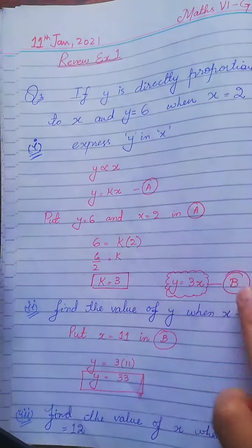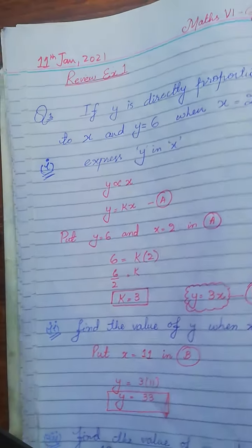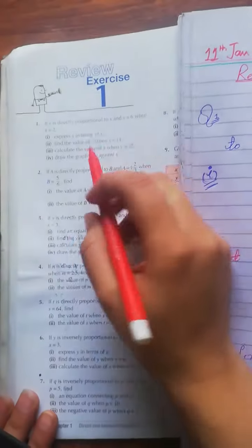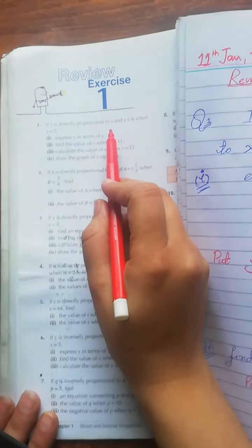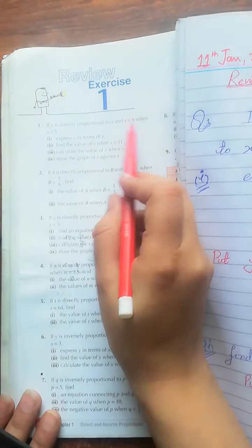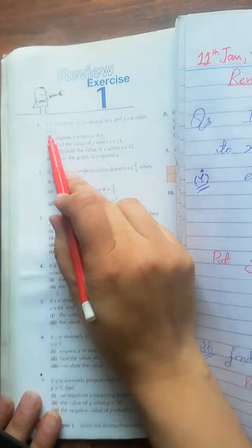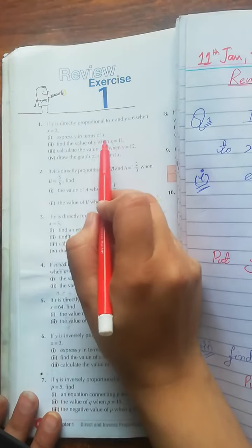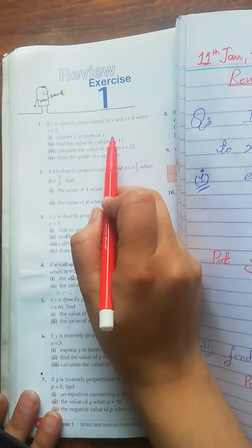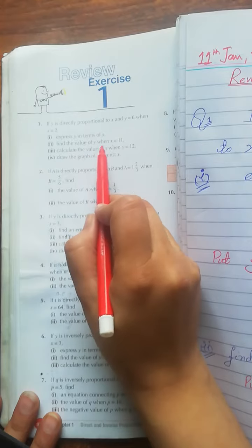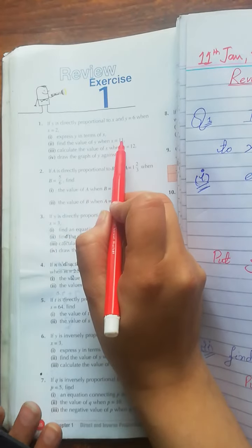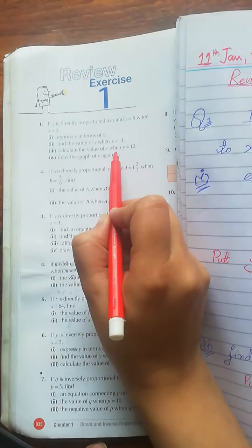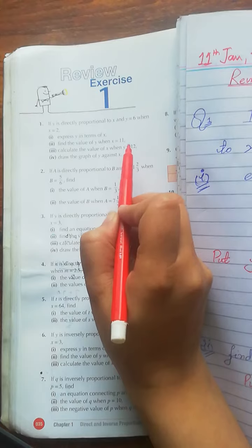Question number 1: If y is directly proportional to x, and y is equal to 6 when x is equal to 2, then express y in terms of x, find the value of y when x is equal to 11, and find x when y is equal to 12.